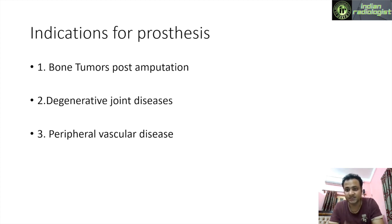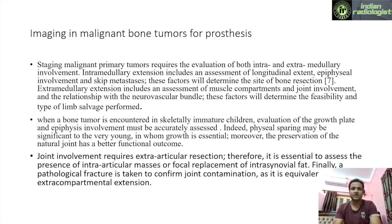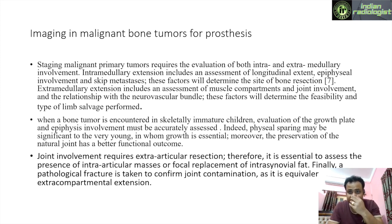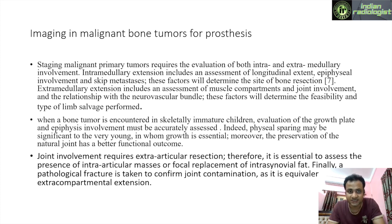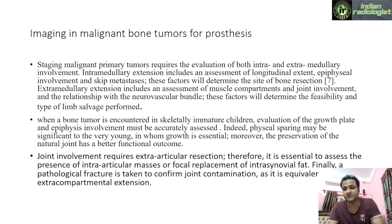First, what imaging do we perform for malignant bone tumors when utilizing prosthesis? Staging primary malignant bone tumors requires evaluation of both intramedullary and extramedullary involvement. Intramedullary extension includes assessment of the longitudinal extent, epiphyseal involvement, and skip metastases. Extramedullary extension provides assessment of the muscle compartments and joint feasibility, which helps in joint movement.